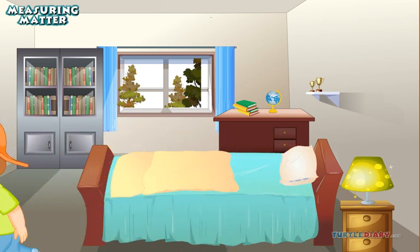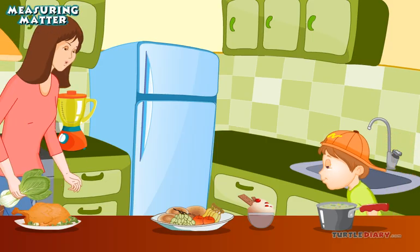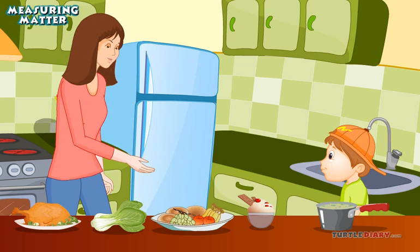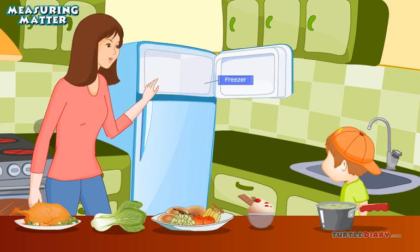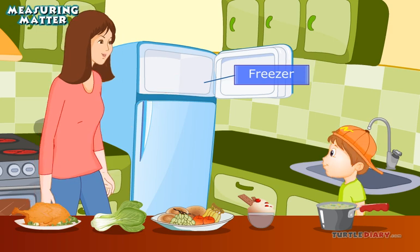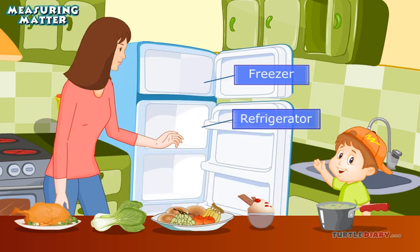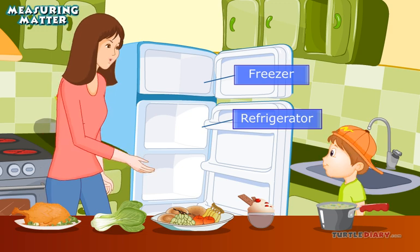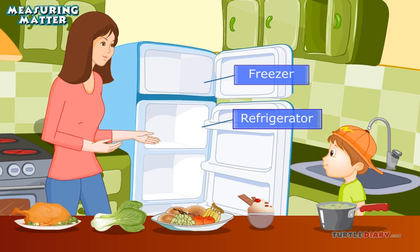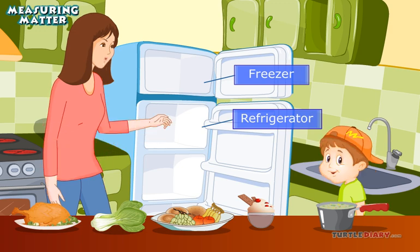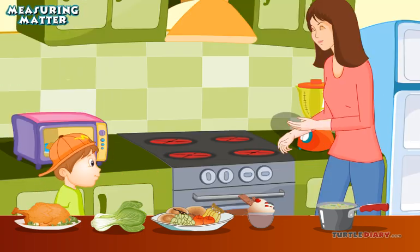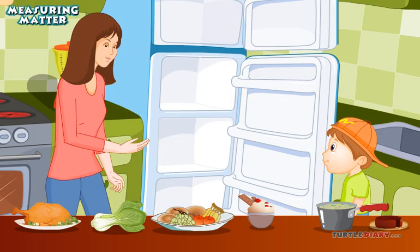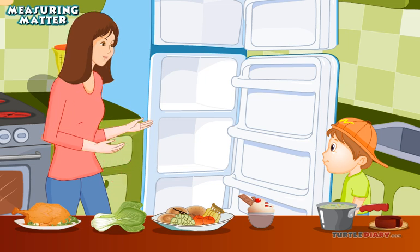Now that Matt's room is done, he goes to help his mom in the kitchen. Matt's mom is sorting the food. She tells Matt that frozen things need to be kept very cold, so they go in the freezer. Fresh foods like meat, vegetables, and fruits need to go in the refrigerator to stay cool. Other foods can be stored at room temperature — the normal temperature of a room in your house — and usually go in a cabinet. Foods that we eat hot get cooked in the oven or on the stove. Matt's mom has shown him another way to measure matter: temperature.